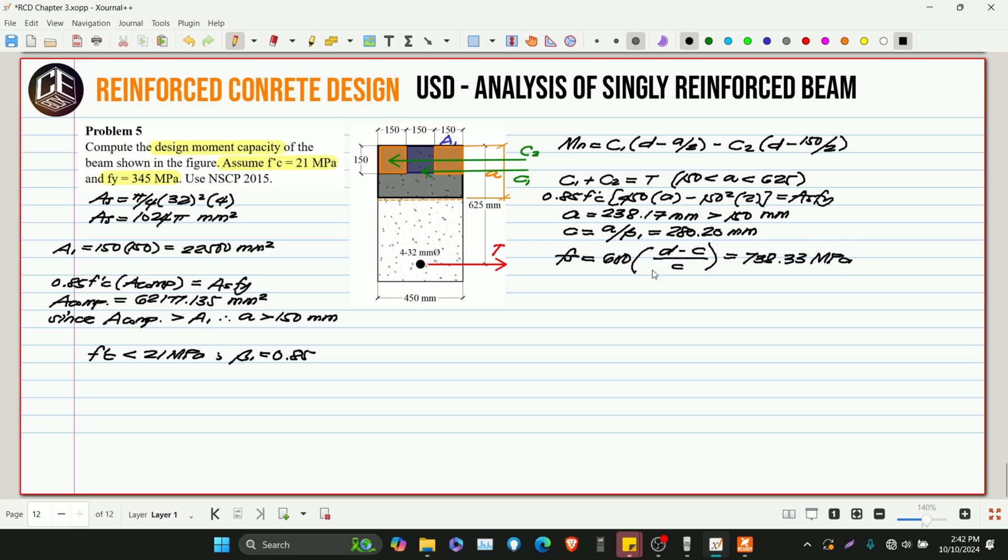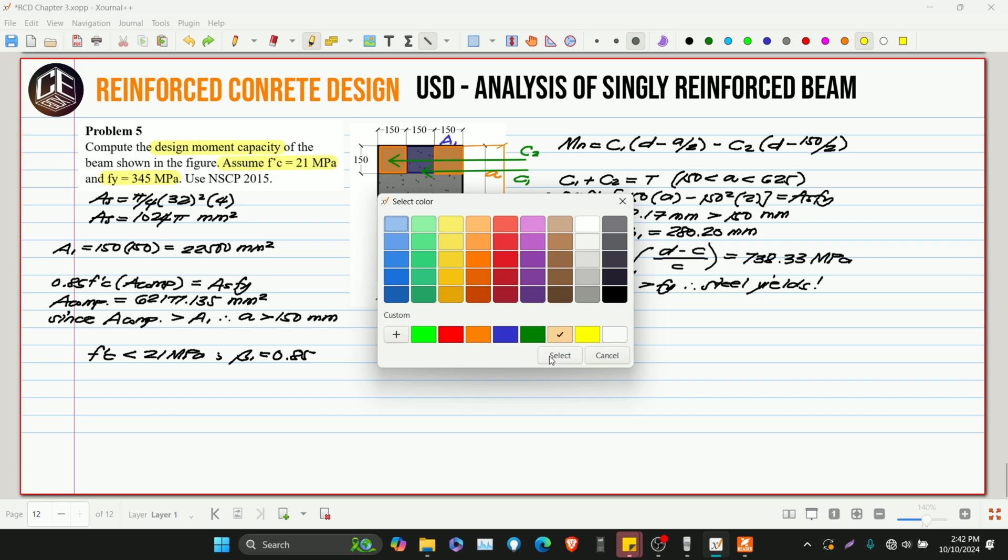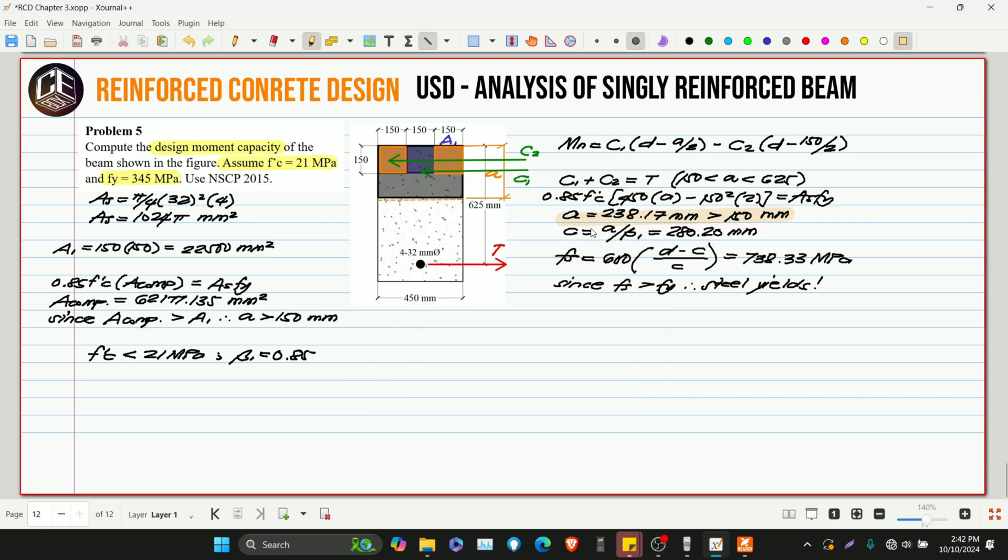Now, since our F's is greater than FY, therefore, it still yields. So, our assumption for the steel is correct and our answer for A is also correct since it's greater than 150 and less than 625. So, let's shade these.